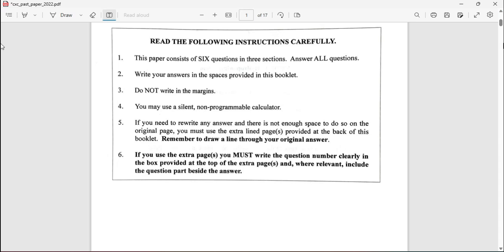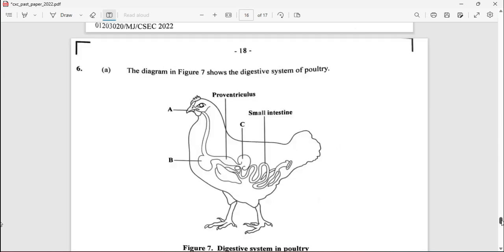Let's move into question number six. Question number six: The diagram in Figure 7 shows the digestive system of poultry. We're seeing A, the beak; B, the crop; the proventriculus; and C, the ventriculus, that part which is the gizzard. Then we have a very small intestine.